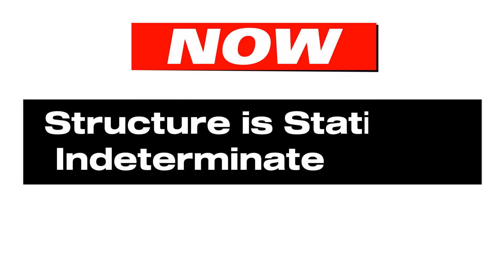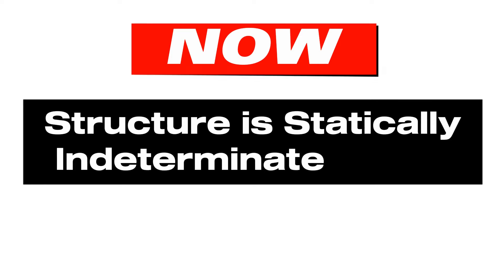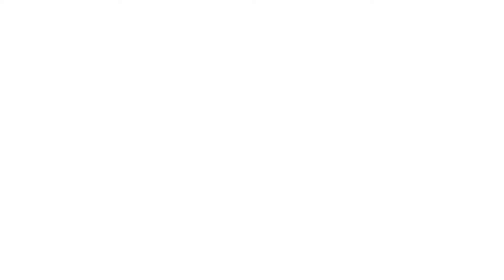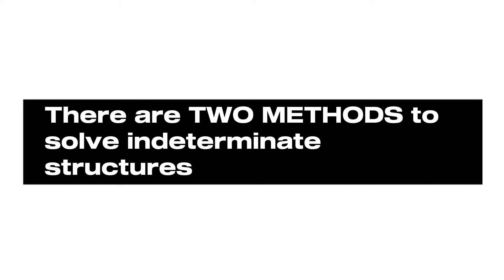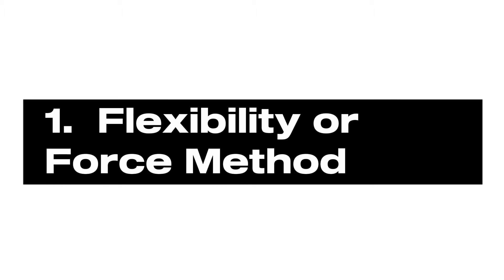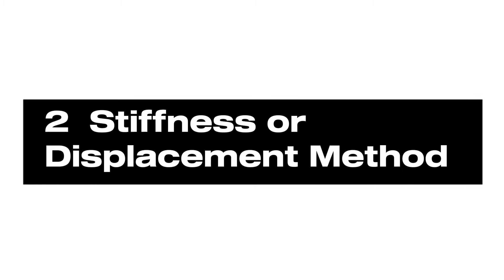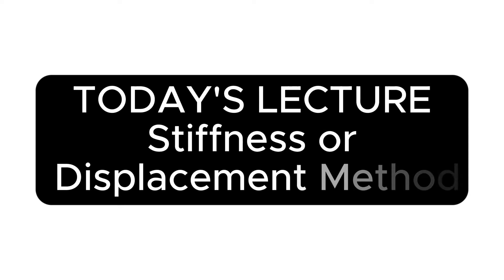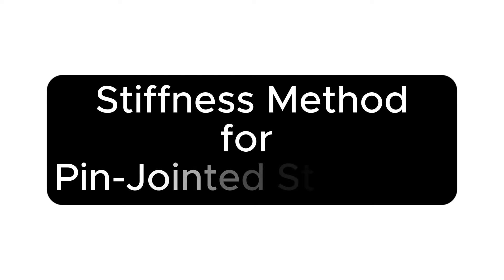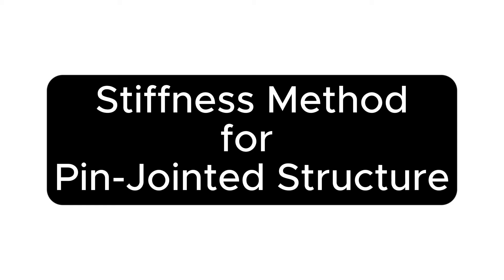If a structure has unknowns greater than three, it is statically indeterminate, and we need specialized methods to work out member forces. There are two main categories of specialized methods: one is the flexibility or force method, and the other is the stiffness or displacement method.